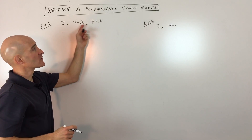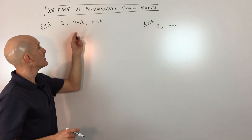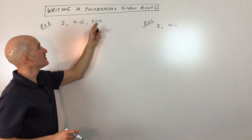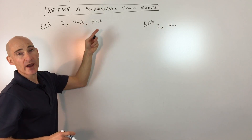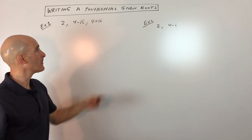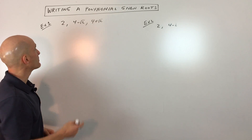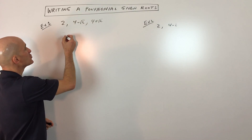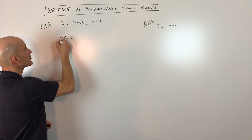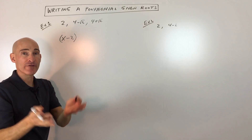So these are going to come as what they call conjugate pairs. All I did was change the sign in between these two quantities. So again, if the coefficients are all rational, these will come as conjugate pairs. What you want to do is write it like this: x minus the root is going to be what they call a factor.